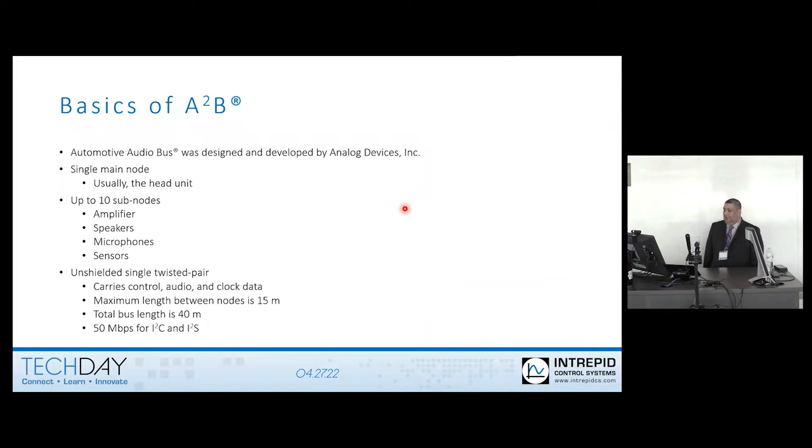The sub nodes can be an amplifier, speakers, microphone, sensors. A sensor can be like an accelerometer. It is one unshielded twisted pair that communicates throughout your entire system. It is a daisy chain, and we'll see that here momentarily in the picture. A2B does carry control data, it does carry audio and clock data as well. The whole system does synchronize to one clock. The maximum length between nodes can be up to 15 meters, but the entire network can only be up to a maximum 40 meters. The bus can be up to 50 megabits per second, and it will carry I2C and I2S.